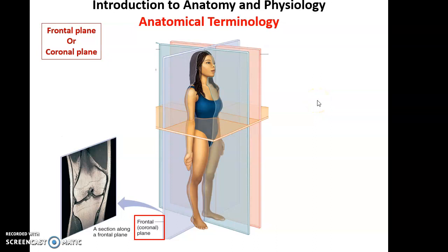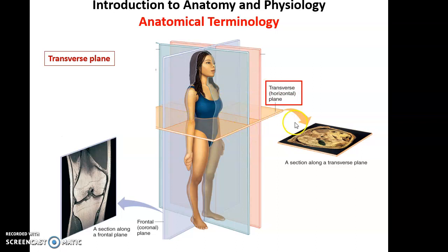Then we have the transverse plane. The transverse plane cuts through the body so that we have a top piece and a bottom piece — a superior and an inferior piece. When we look at where the plane cut through, we get a transverse section giving us a view of that part of the body, in this case a view of the abdominal cavity.